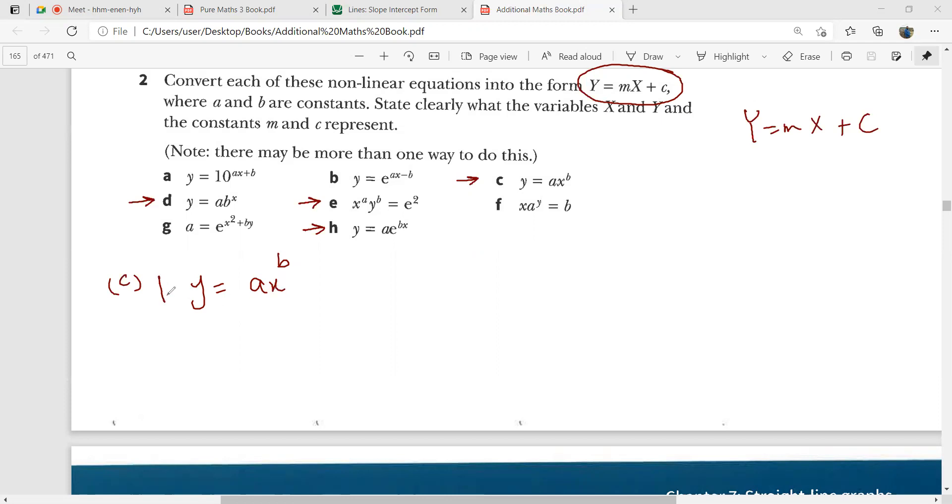There is a product over here. So if I go reverse of that product law, I can split this one term into two terms. So this is going to be ln y equals ln a plus ln x raised to the power b. And this is ln y equals ln a plus b ln x.